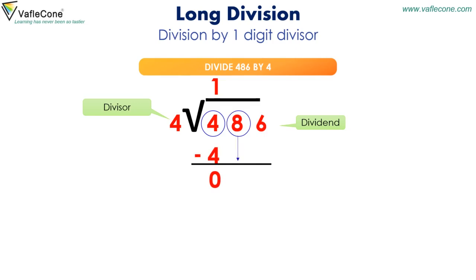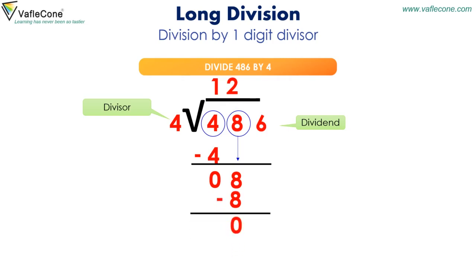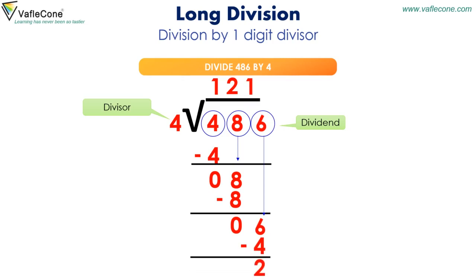At the 10's position, 4 into 2 is equal to 8, so 8 minus 8 is equal to 0. Then at the 1's position, 4 into 1 is equal to 4, which is nearest to 6, so 6 minus 4 is equal to 2. Hence 2 is the remainder and 121 is the quotient.